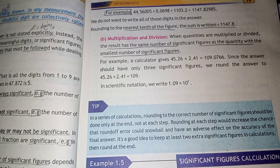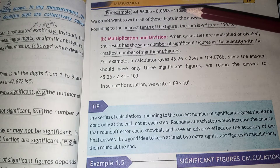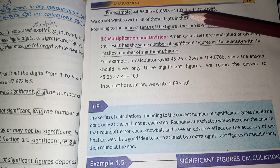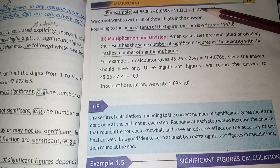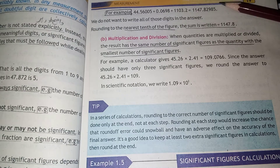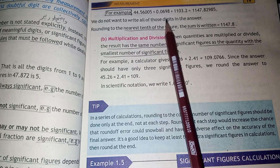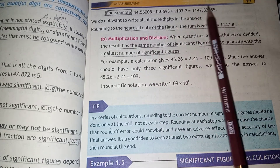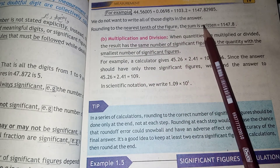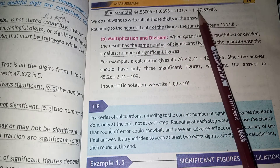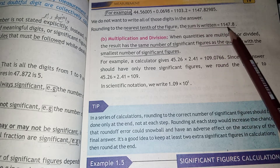For example, 44.56005 plus 0.0698 plus 11.032 gives 11.47829... but we do not write all those digits. Rounding to the nearest tenth, the sum is written as 11.478 — we do not write unnecessarily long decimal answers.